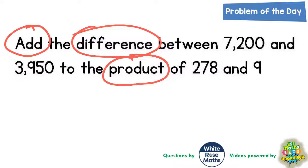Now obviously what we need to do is understand what these words mean. Clearly add is going to be some sort of adding. Difference between two numbers is when you subtract the smaller number from the bigger number and the product of two numbers is when you multiply some numbers together.